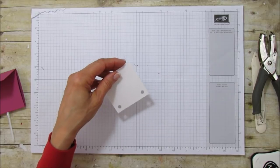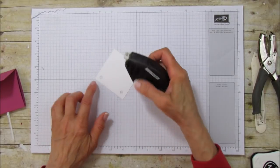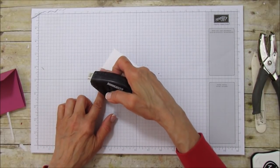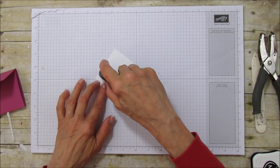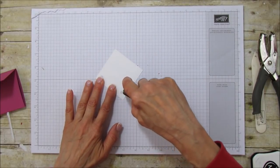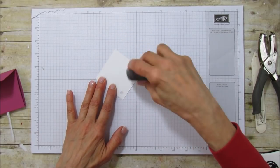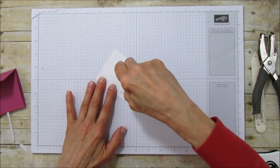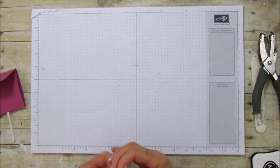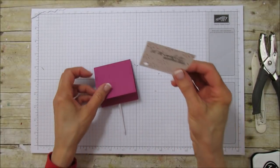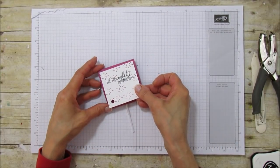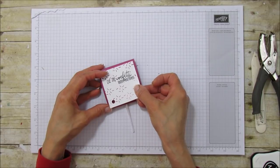Now I'm going to use some fast fuse and I'm only putting adhesive above those two little holes that we just made. So we're going to bring our little holder back and we're going to put this on the front here.